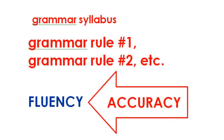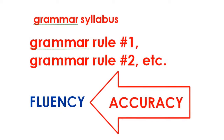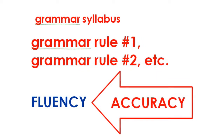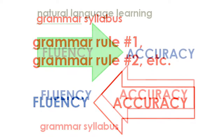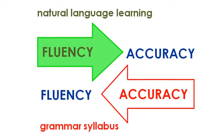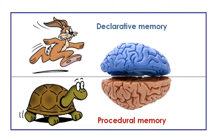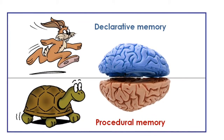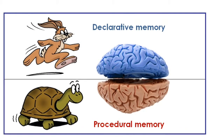A course which follows a traditional grammar-based syllabus essentially says: learn this rule and practice it, then learn this rule and practice it, and so on. And from all these grammatically accurate pieces of language, eventually you will be able to speak fluently. As I've already shown, this is pretty much the exact opposite of how we naturally learn language. What we do is use our declarative memory to build a vocabulary of useful items as we're exposed to the language. While that's going on, below the surface and over a much longer period, our procedural memory starts to make sense of the grammar, so our language gradually becomes more accurate.